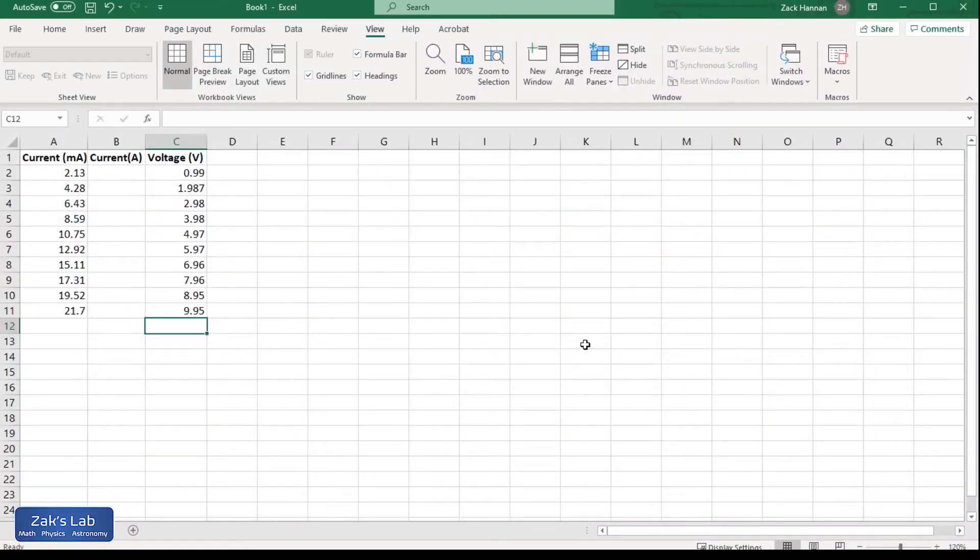Okay, here we are in Excel and I've input the data from the lab. So I prefer to put data into a spreadsheet in the units that I actually measured in, and then I'll just convert within Excel. So I put the current in using milliamps because that's what the ammeter was set to. The voltmeter was set on volts already so I don't have to tweak that.